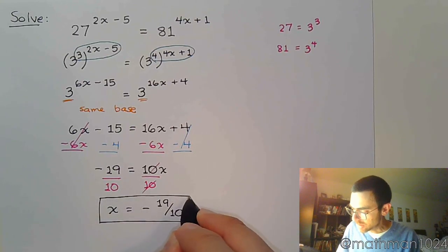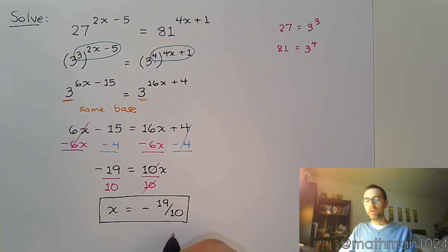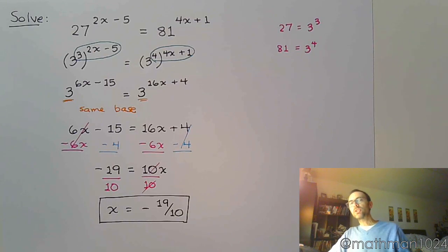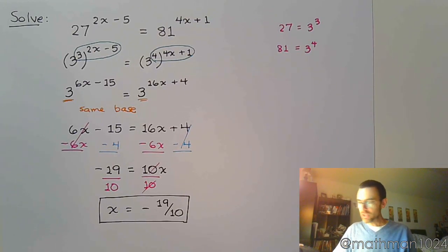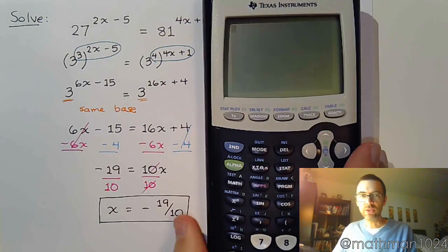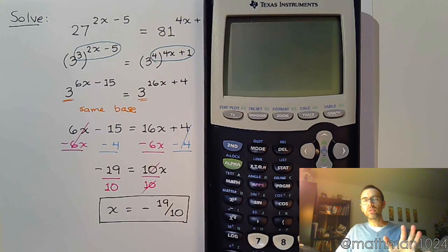And we are left with x is equal to negative 19 over 10. All right. Doesn't look to be too bad. Now, before we go into the next problem, let's check this with our graphing calculators.